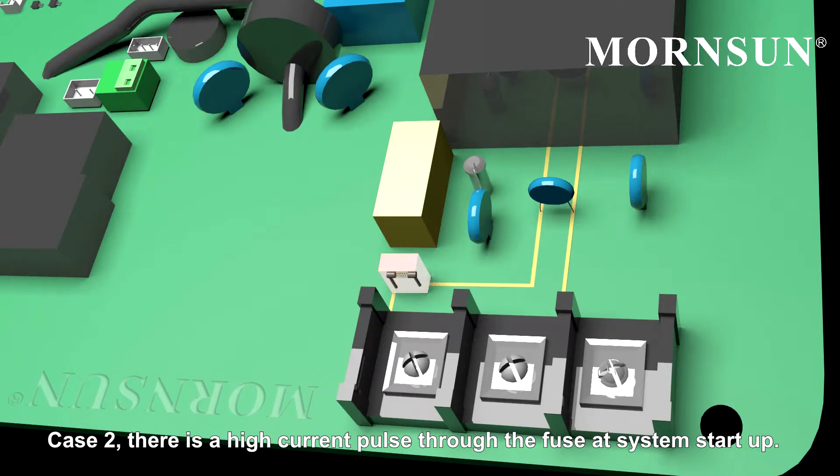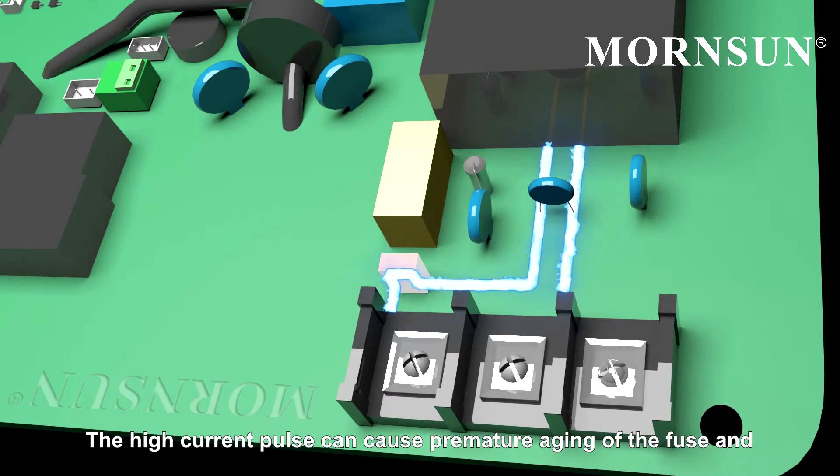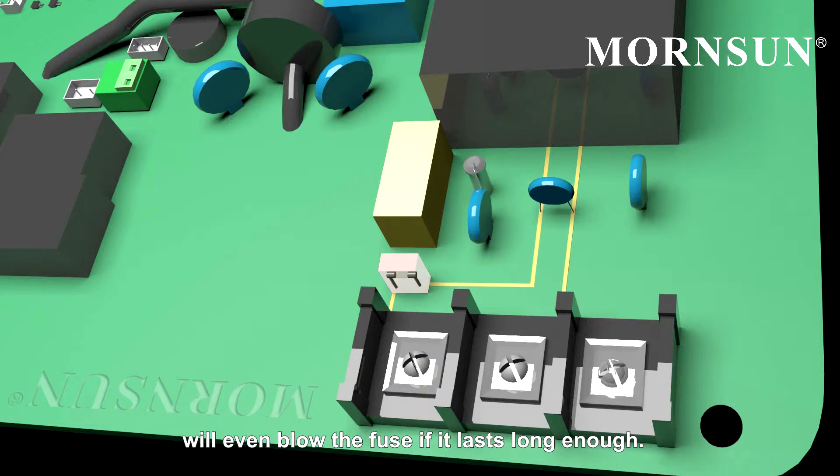Case 2: There is a high current pulse to the fuse at system startup. The high current pulse can cause premature aging of the fuse and will even cause the fuse to blow if it lasts long enough.